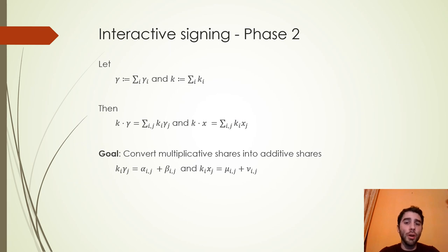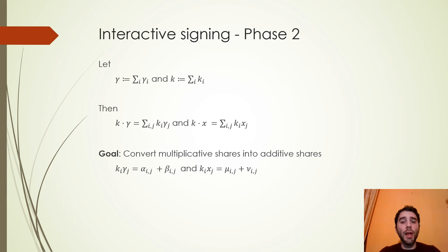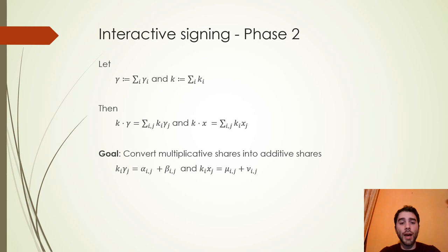In phase two, we call gamma the sum of the gamma_i and k the sum of the k_i. What the players want to compute is k·gamma and k·x, which can be seen as the additive shares k_i·gamma_j and k_i·x_j computed in the P2P protocols. This follows the same idea as the Gennaro-Goldfeder protocol where we want to mask the value of k. The goal is to convert these additive shares of k·gamma and k·x into additive shares called alpha, beta, mu, and nu.